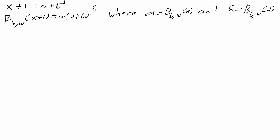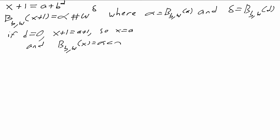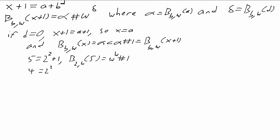Now consider what happens when we write x in hereditary base b notation. If d = 0, then x is just a — since x + 1 was a + b^0 = a + 1, so x = a. Therefore b_{b,omega}(x) is just alpha, which is less than b_{b,omega}(x + 1), which was alpha + 1. For instance, when x + 1 is 5, b_{b,omega}(5) = omega^omega + 1, while b_{b,omega}(4) = omega^omega.